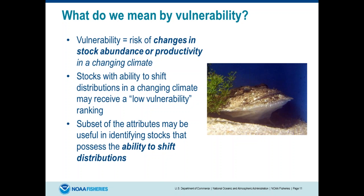I wanted to clarify what we meant by vulnerability. In our mind, vulnerability was the risk of a species having a change in its abundance or productivity. We wanted to identify species we expected to decrease in abundance as the climate changes. As we moved forward, managers were also interested in species that would shift distributions — not just those that decrease in abundance. The original view was that if a species can adapt by changing its distribution, that gave it a lower vulnerability. So we realized we could pull out a subset of attributes that can predict species with the propensity to shift distributions, giving managers an estimate of vulnerability to shifts in abundance as well as which ones have the ability to shift distribution in the future.